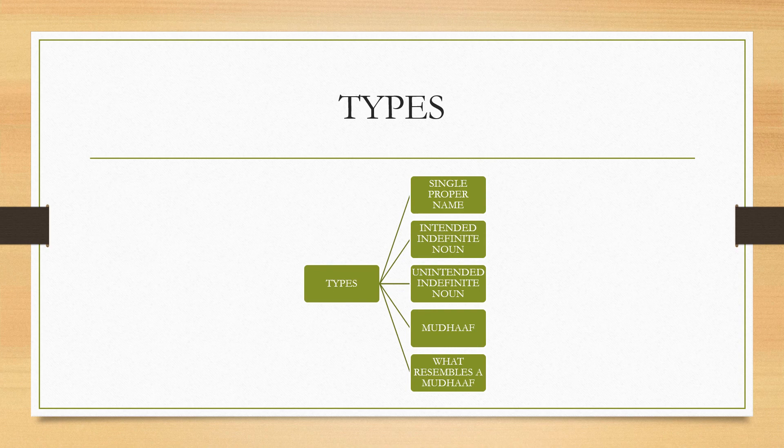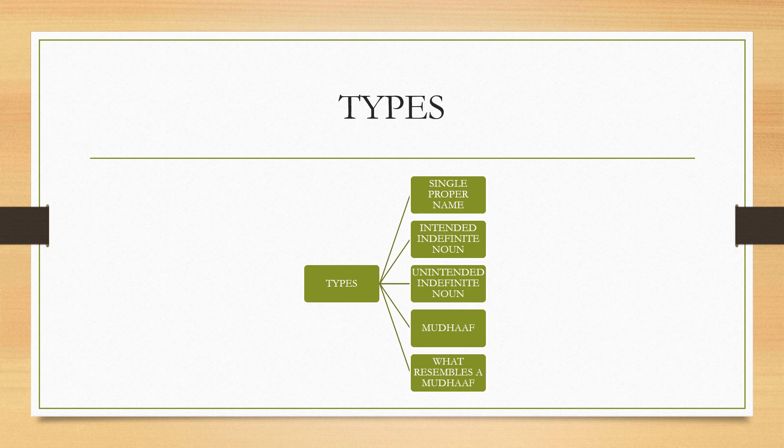We have five types of munada. The first type is a single proper name, al-mufrad al-alam. We've taken in the previous lesson what's meant by mufrad - that which is not a mudhaaf nor does it resemble a mudhaaf. It must be al-alam, a proper name. Examples: yaa Muhammadu, yaa Fatimatu, yaa Muhammadani, yaa Fatimatani, yaa Muhammaduna, yaa Fatimatu. The single proper name when it falls under the munada will always be marfu.